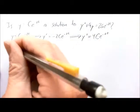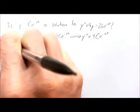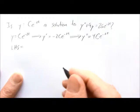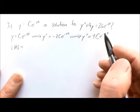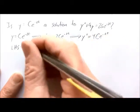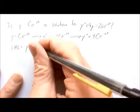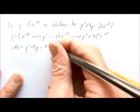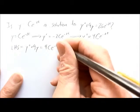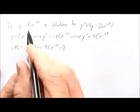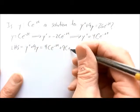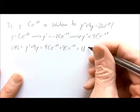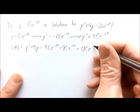We can now put the left-hand side together. The left-hand side is y double prime plus 9y, so that's 4c e to the minus 2t plus 9 times c e to the minus 2t. Adding those together we get 13c e to the minus 2t.